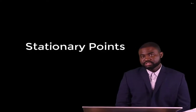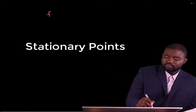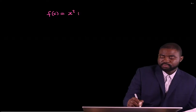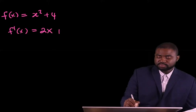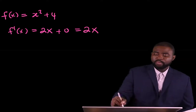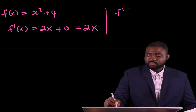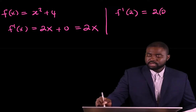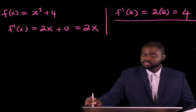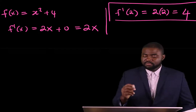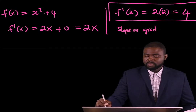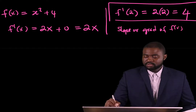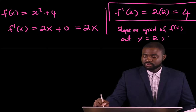Remember, differentiation tells us how the slope of a graph changes. For example, if we have a function which is equal to x squared plus 4, then f prime of x is going to be equal to 2x. Then f prime of 2 is going to be 2 multiplied by 2, which is equal to 4. So the question is, what does this 4 mean? It simply implies that the slope or gradient of f of x at x equal to 2 is 4.